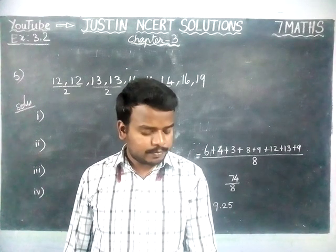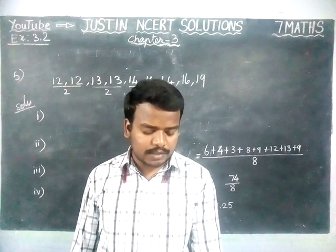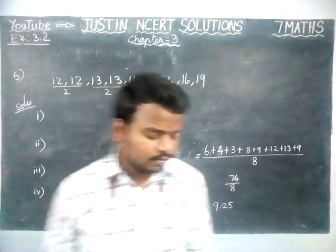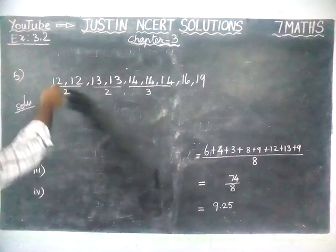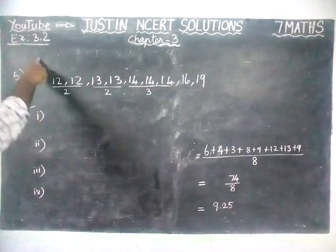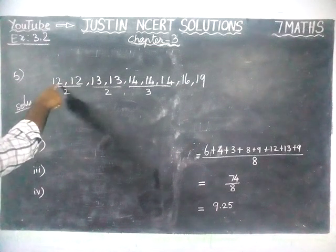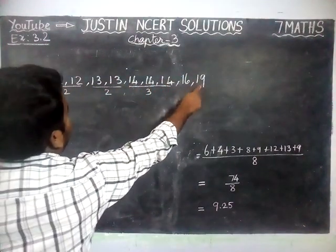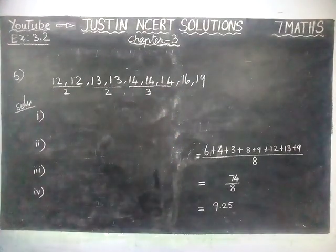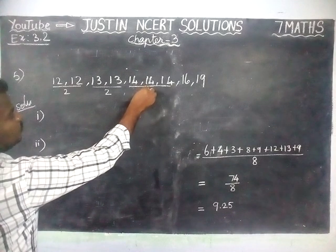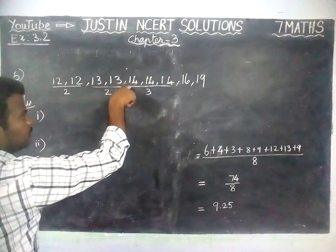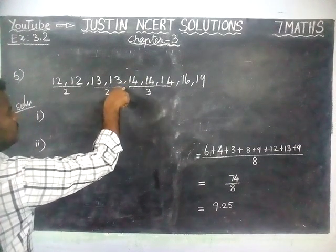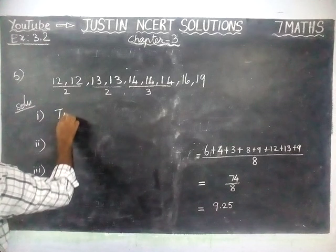1st statement: the mode is always one of the numbers in the data. We have taken the data: 12, 12, 13, 13, 14, 14, 14, 16, and 19. According to the statement, mode is always one of the numbers in the data. Here, mode is equal to 14. This 14 is one of the numbers in this data. Therefore, that statement is true.